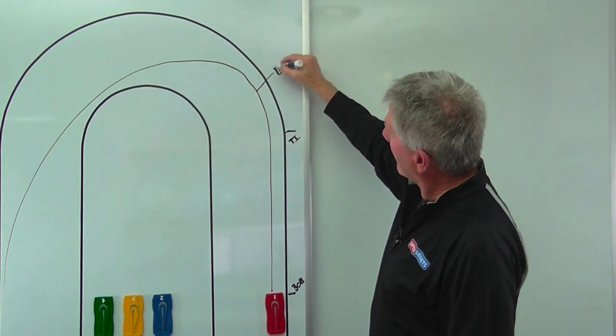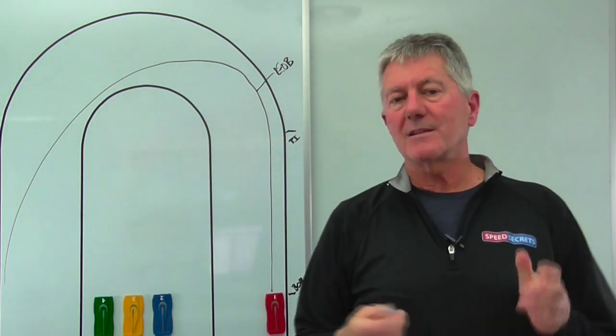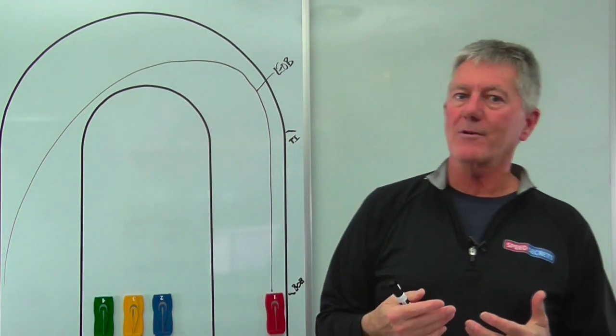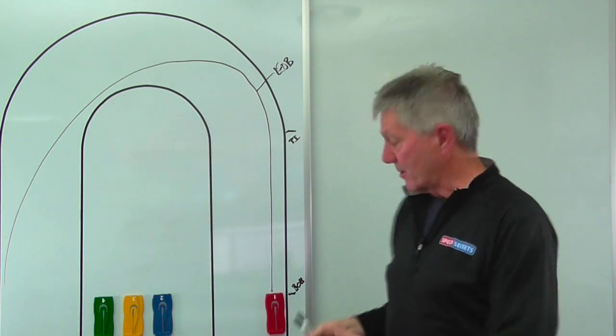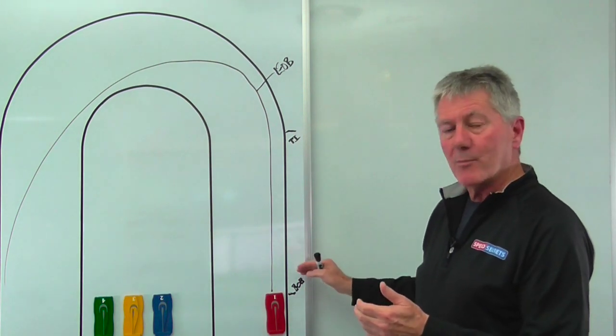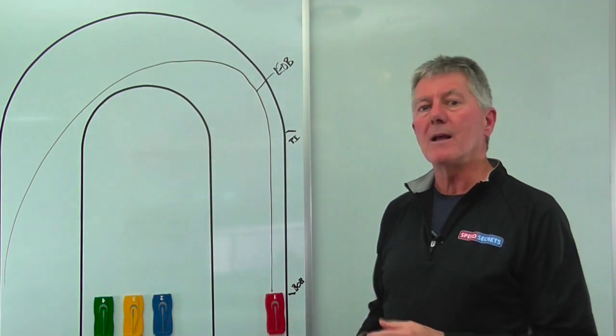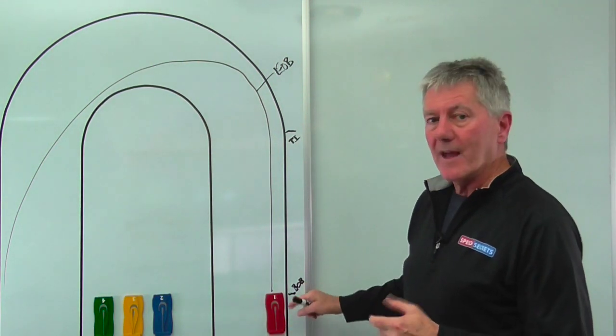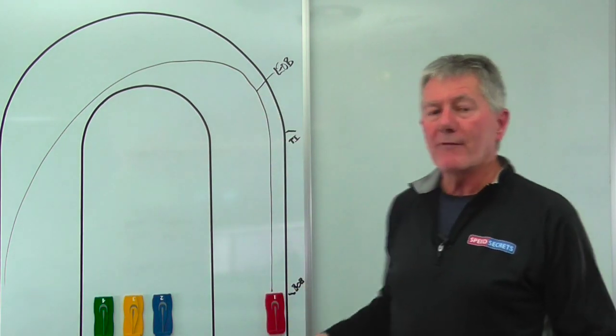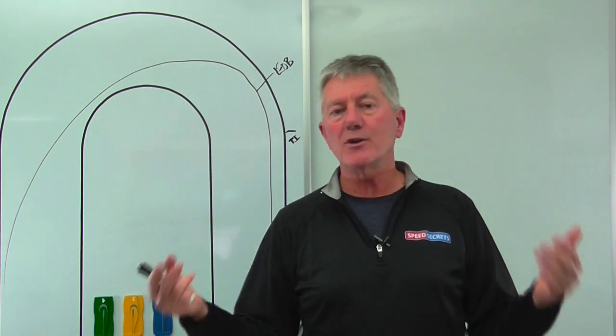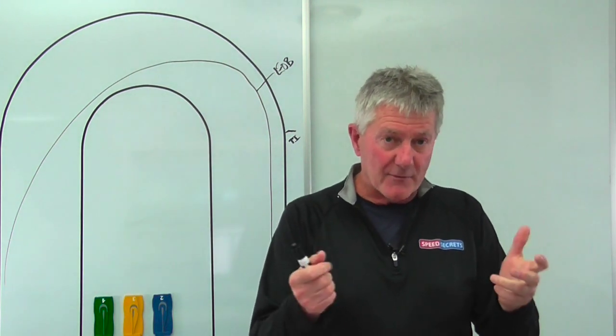To me, the single biggest thing that causes drivers to over-slow for a corner is being overly focused on where they begin braking. They're approaching the braking zone, really focusing on that brake marker on the side of the track - the three, the two, the crack in the pavement, or the end of the curbing. It's really important that you get your eyes up looking into where you're going to end your braking. The begin of braking will be in your peripheral vision.